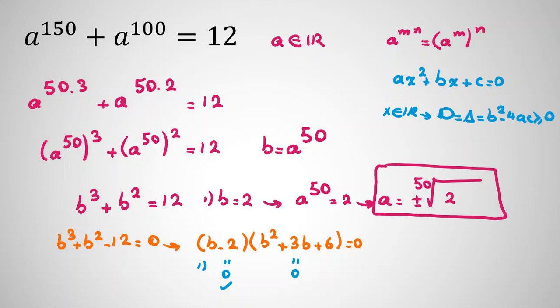So here, if we calculate delta or discriminant, it will be 3 squared minus 4 times 1 times 6, which is 9 minus 24, which is minus 15, obviously less than 0. So we don't have any real solution here.